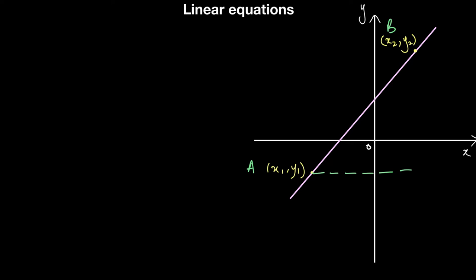The change in X from A to B is this horizontal line here, whereas the change in Y from A to B is the length of this vertical line over here. So this is the change in Y, and we know that the length of this line segment is simply the hypotenuse if we have a right angle triangle.